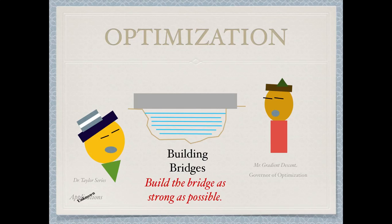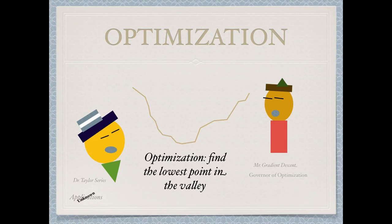Optimization is really like finding the lowest point in a valley, and that is what one of the main techniques in optimization does — this is called gradient descent. Let's assume you are given a valley shape. How would you find the lowest point? You would simply put a ball somewhere and let gravity act on it, letting the ball roll down until it reaches the lowest point in the valley. This is called gradient descent, and it is an extremely important technique used everywhere in engineering.